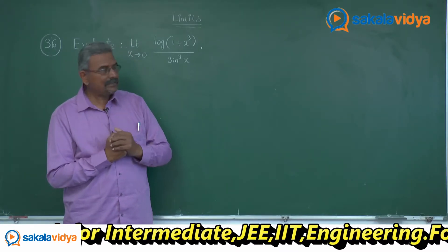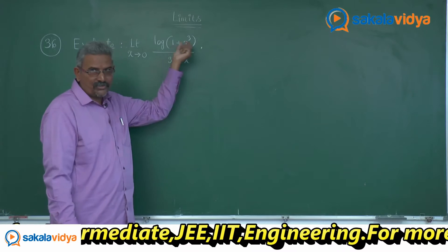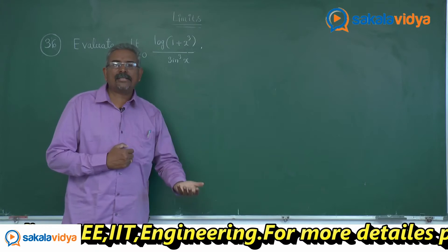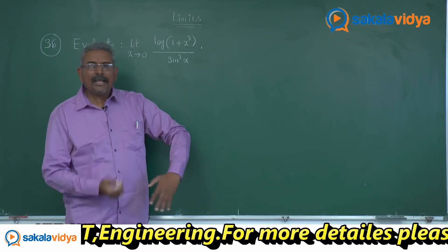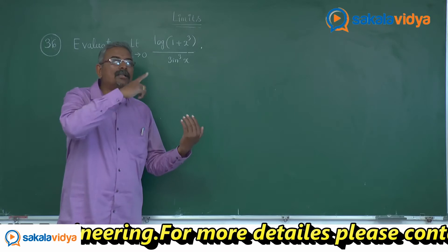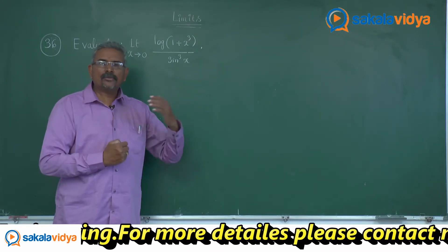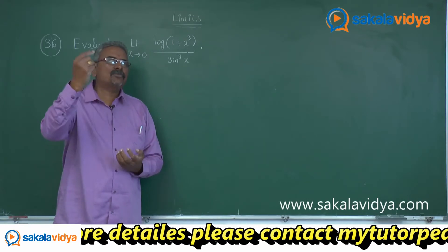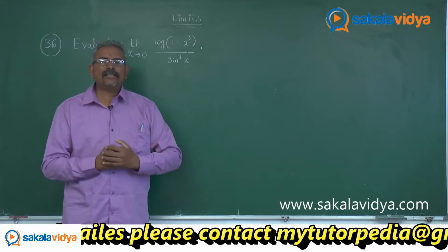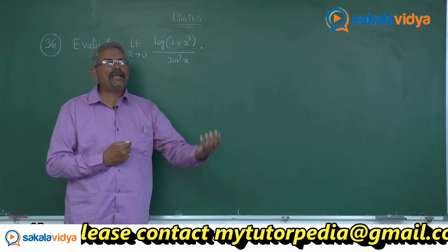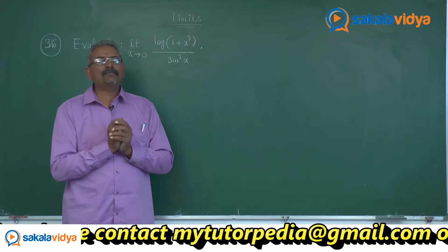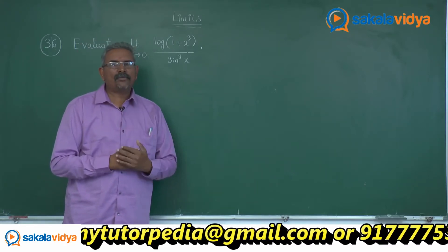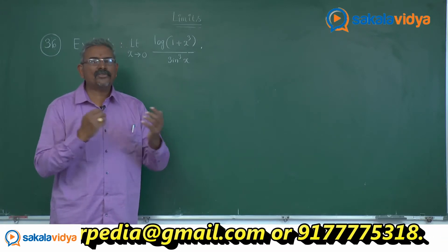In the case of log of 1 plus x cube, instead of x we have x cube. That means, if we consider log of 1 plus x cube divided by x cube, as x approaches to 0, x cube also approaches to 0. So limit x cube tends to 0 of log of 1 plus x cube by x cube becomes 1. As we have sin cube x in the denominator, sin cube x by x cube can be written as sin x upon x whole cube, and as the limit approaches to 0 that gives 1, so the answer is 1.